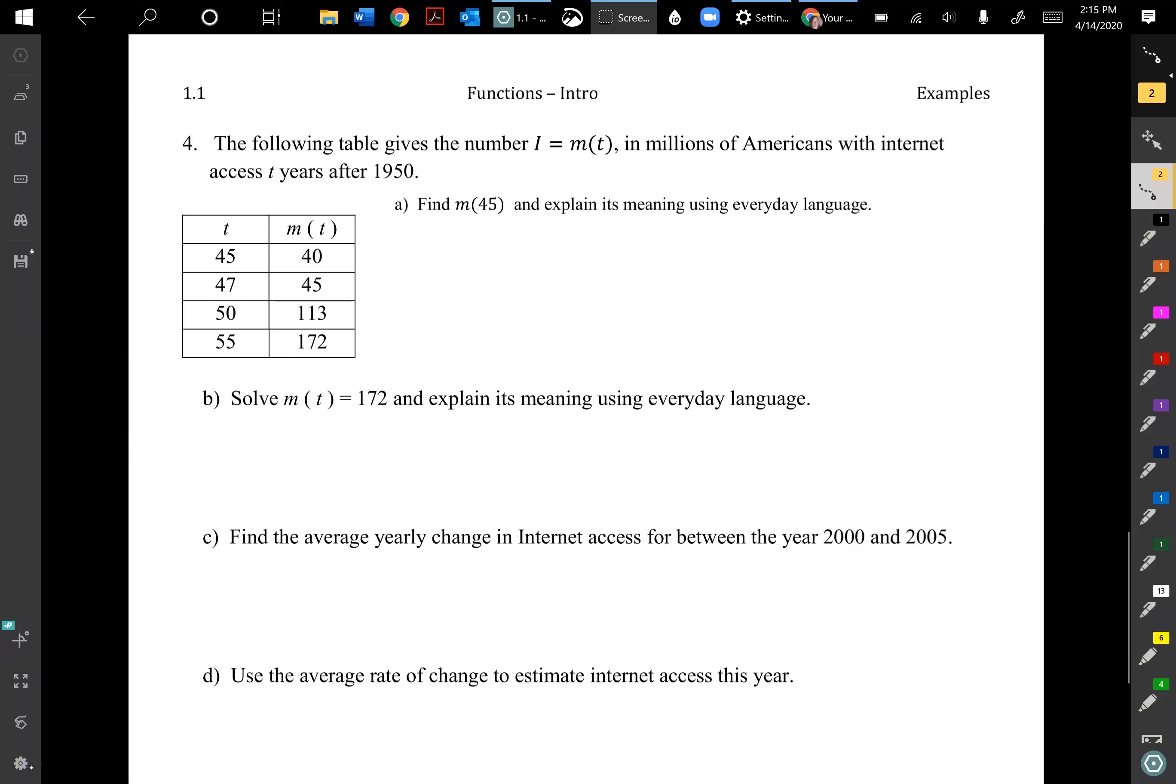Okay, the following table gives the number m(t), in millions of Americans with internet access t years after 1950. We're going to look at this table here, and although I told you in a previous problem we don't want to extrapolate, in this one we will for the last question. We're going to make a prediction.